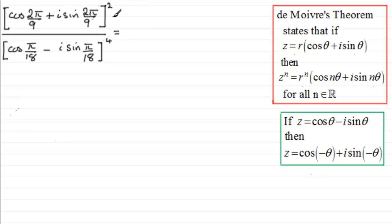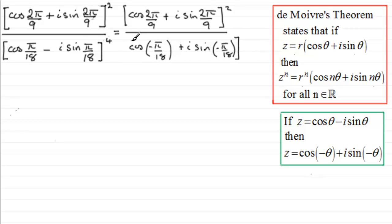So let's just copy out the top again. What we've got then is the cosine of 2π over 9 plus i sine 2π over 9, and that is all to the power of 2. And that is divided by, and so to get this now in the correct form with a plus here, I pick up on this result and change this to the cosine of minus π over 18 plus i sine of minus π over 18. And all of this is to the power 4.